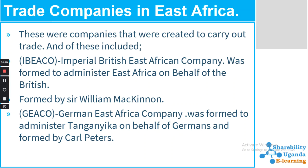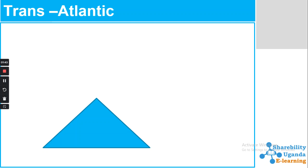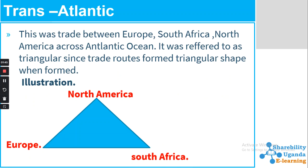The transatlantic trade was the trade between Europe, South Africa, and North America across the Atlantic Ocean. It was referred to as triangular trade since the trade routes formed a triangular shape — from Europe to America, from America to South Africa, and from South Africa back to Europe.